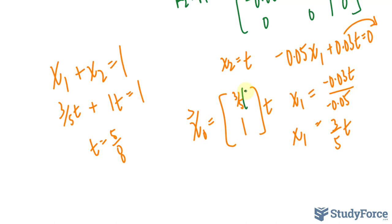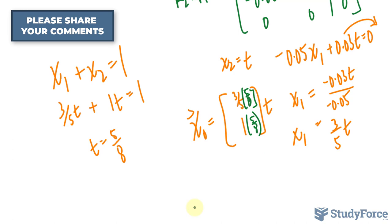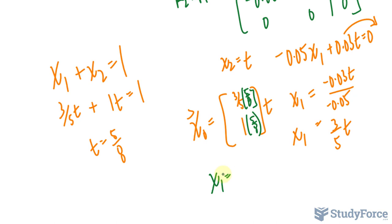Therefore, 3 over 5 times 5 over 8, and 1 times 5 over 8, gives us what x sub-1 and x sub-2 should be. x sub-1 is the product of these two. That's 3 over 8, and x sub-2 is 5 over 8.